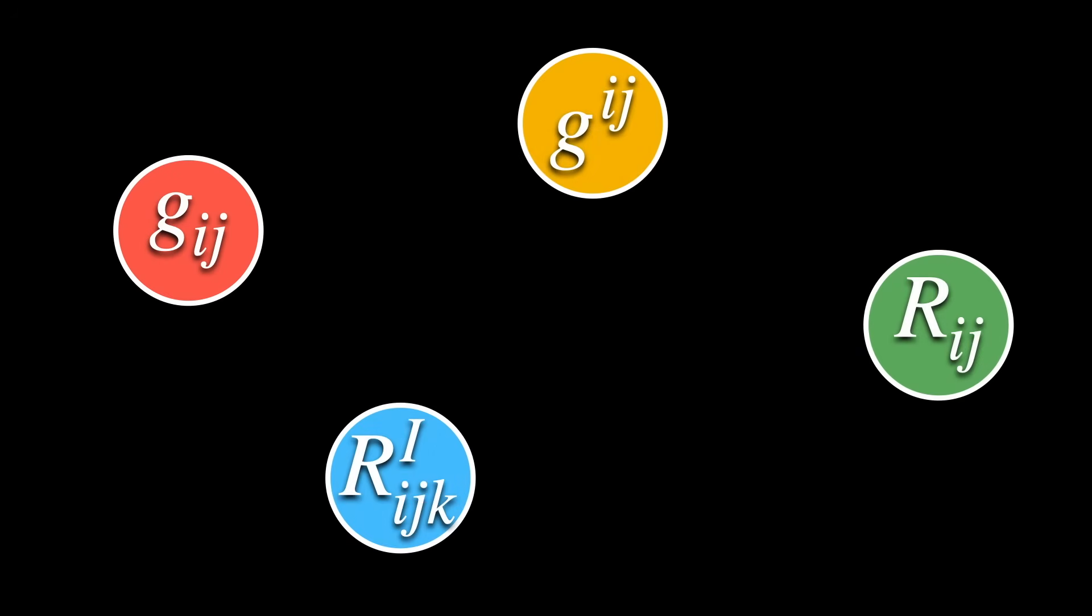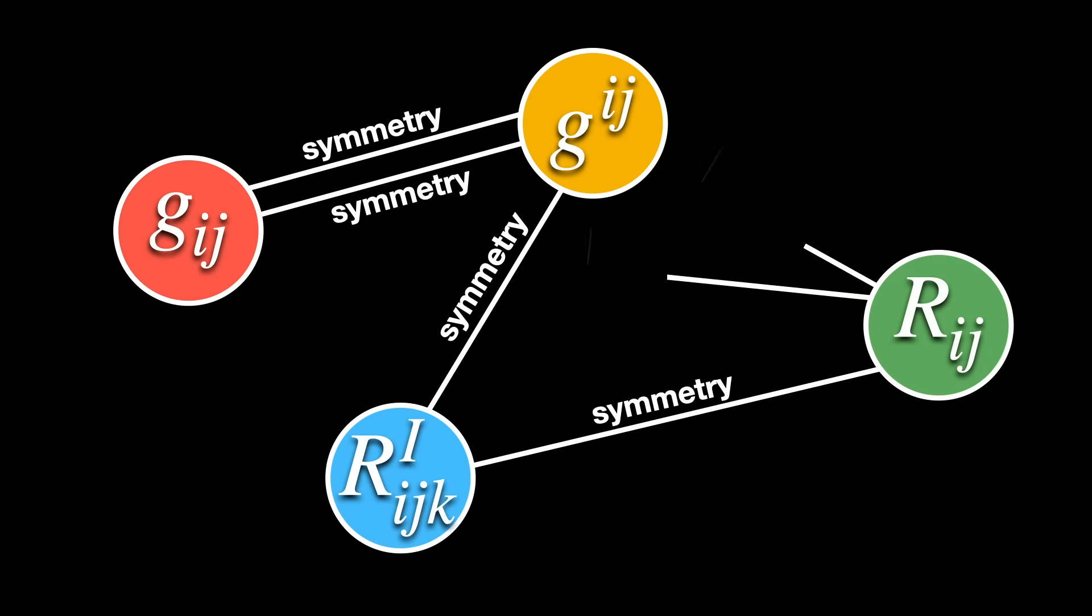In a similar way, when working with these tensors, so Riemannian metric, inverse metric, Riemann tensor, Ricci tensor, and so on, we will find many dependencies between its components. These dependencies are called symmetries, and they simplify our lives a lot.